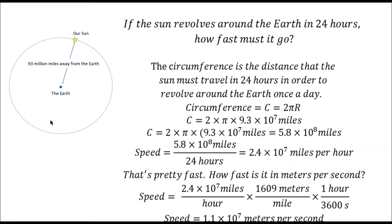If the Earth were the center of the universe, the sun would have to revolve around the Earth in 24 hours. The sun is 93 million miles away from Earth, or 9.3 × 10^7 miles. The distance it would travel in 24 hours would be the circumference, which is 2πr. That's 2 × π × 93 million miles, which equals 580 million miles, or 5.8 × 10^8 miles.